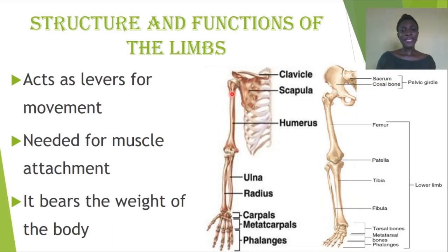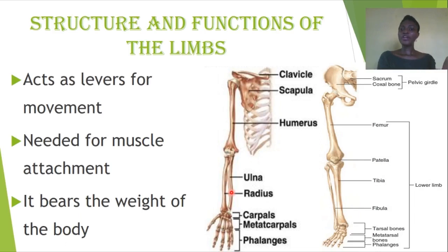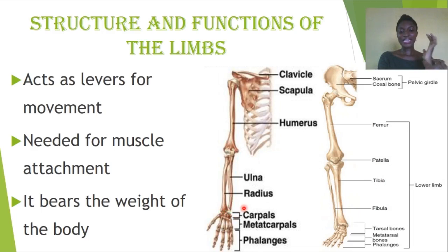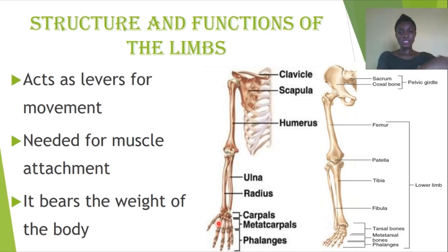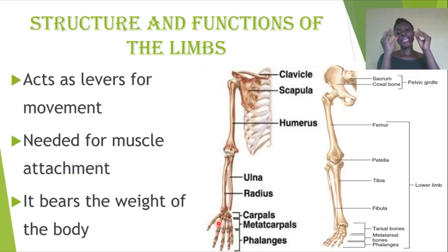Looking at the forelimb, the first bone is the humerus — a very long bone at the top. Then we have two bones: the radius and the ulna, with the ulna being longer than the radius. These provide surfaces for muscle attachment so that contraction and relaxation can bring about movement. The third part is the carpals, the fourth is the metacarpals — which form your palm — and finally the digits, known as the phalanges.